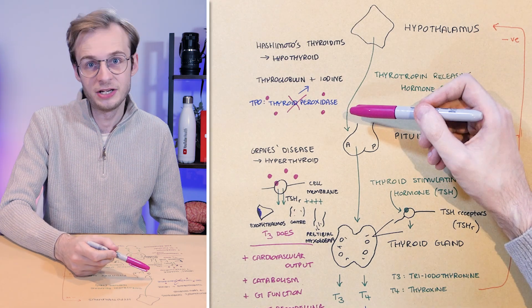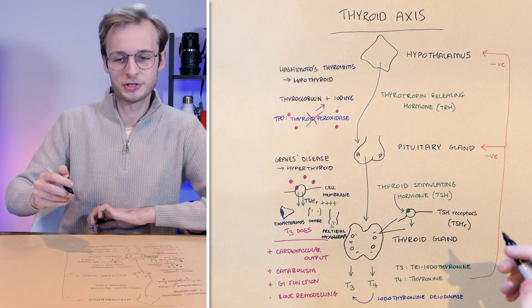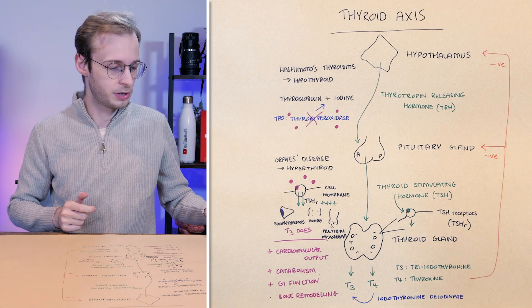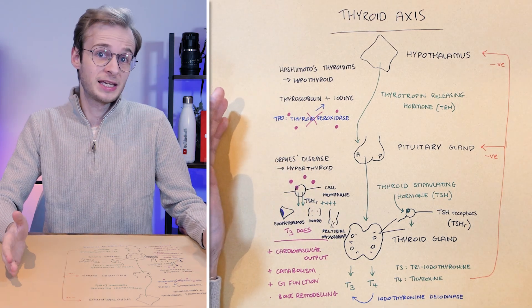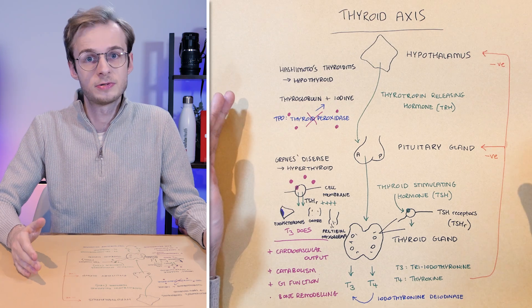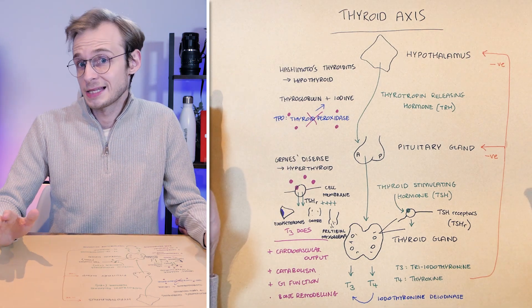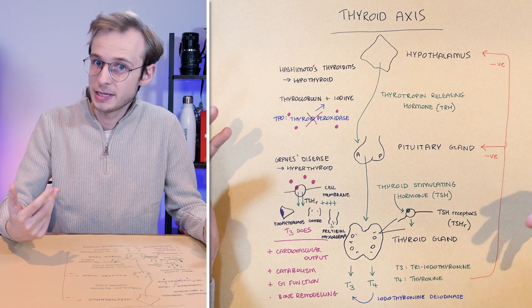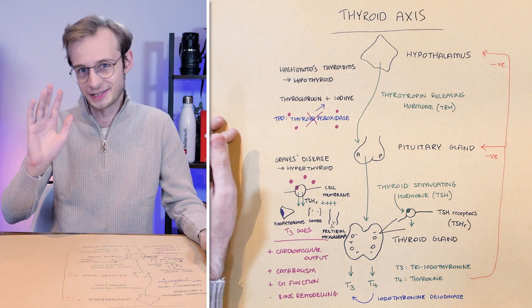And so we instead end up in a hypothyroid state. So thank you for watching everyone. That is a go through the thyroid axis, the key hormones and messages involved, and the key clinical conditions that you need to associate with it. Thank you very much for watching. If you want to see more like this, let me know any particular topics, conditions, etc. we want to discuss in this format. Thank you very much and I'll see you next time.